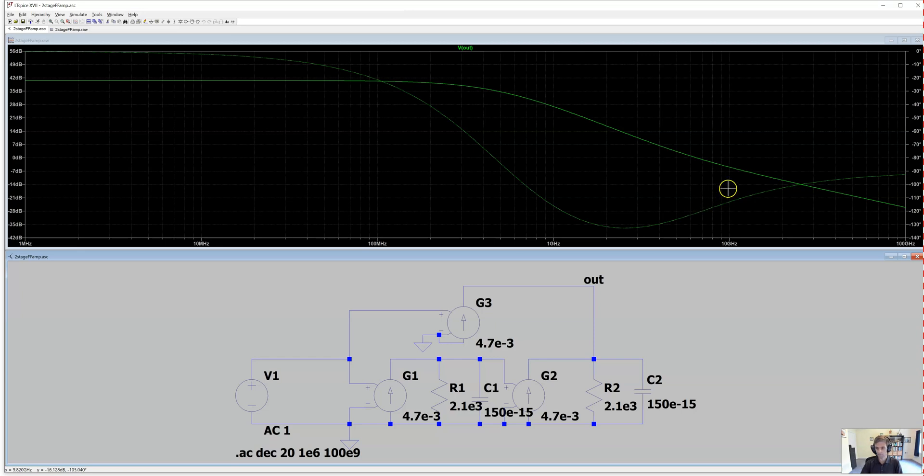There's some slight deviation from that because the zero in addition to changing the phase response also introduces a little bend in the magnitude response. So it extends the unity gain frequency a little higher than our calculations assumed. But the approximations are all pretty good here. So we've also, for fun here,